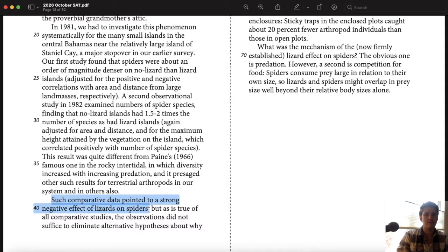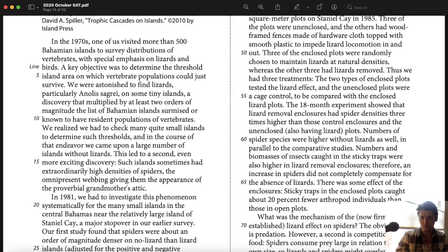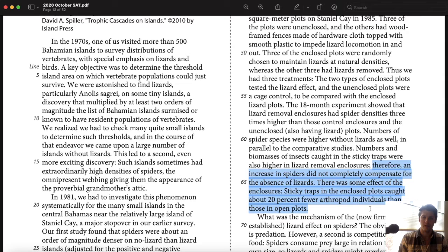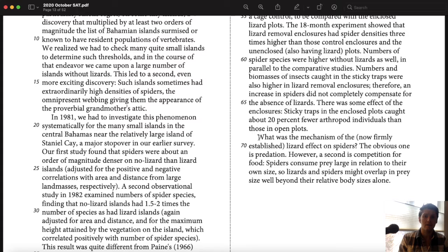Next paragraph. Such comparative data pointed to a strong negative effect of lizards on spiders. So in other words, not more with more. If there's more lizards, there's less spiders. But as is true of all comparative studies, the observations did not suffice to eliminate alternative hypotheses about why islands with or without lizards might differ. A more reliable investigation would be experimental. Details about some experiment they're going to do. Massively long paragraph. Go to the end. There was some effect of the enclosures. I don't know what they're talking about, and I don't care. So I'm going to keep reading.